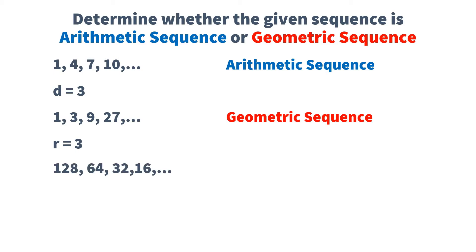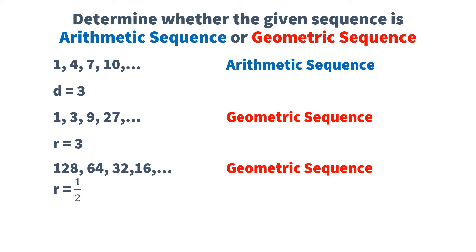Let's have another one. 1, 28, 64, 32, 16, and so on. So if you try to look for common difference or common ratio, you will have a common ratio, which is 1 half. So since you have a common ratio, then you have here a geometric sequence.